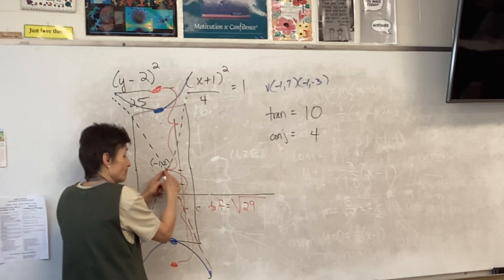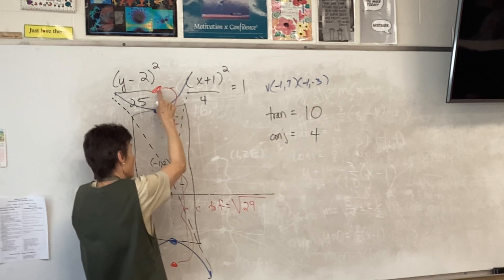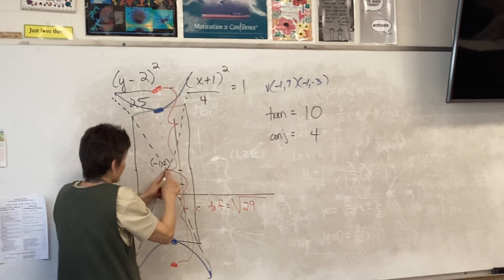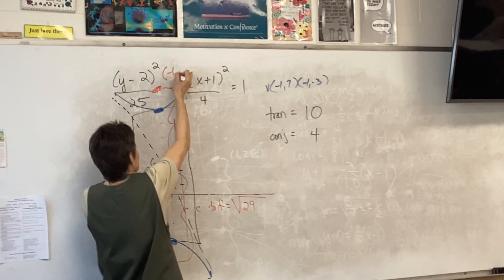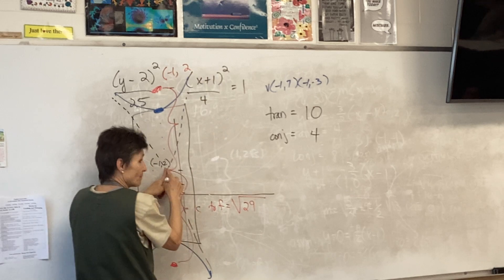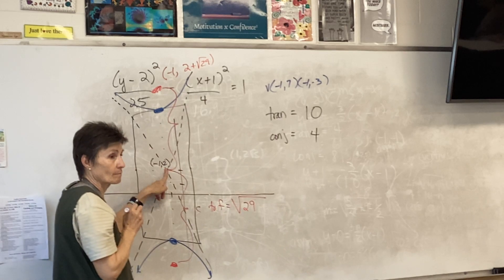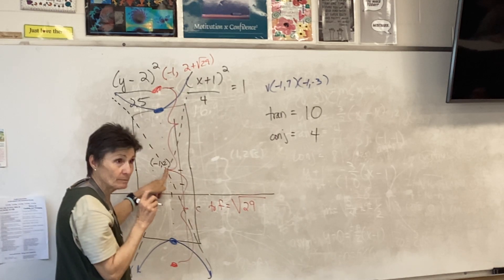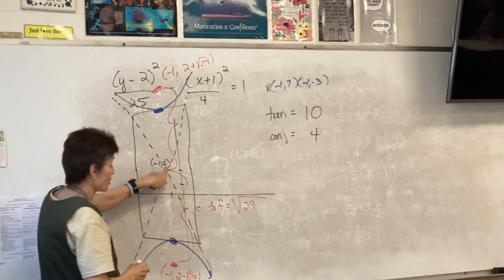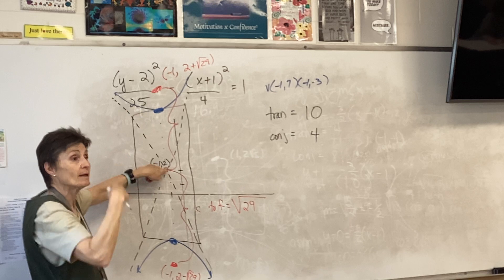Start at your center and go straight up. If you're going straight up, which coordinate is changing? X stays the same. I take my y, which is 2, and add root 29. Then going straight down: negative one, 2 minus root 29. Start with your original y, add root 29, and subtract root 29 — those two points go in the focus line.